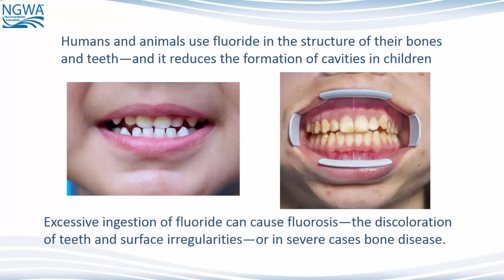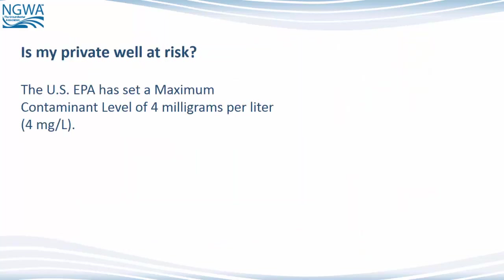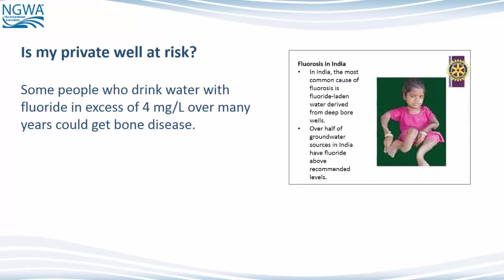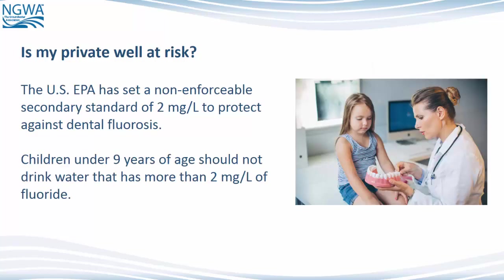Excessive ingestion of fluoride can cause fluorosis — the discoloration of teeth and surface irregularities — or in severe cases, bone disease. The U.S. EPA has set a maximum contaminant level of 4 mg per liter. Some people who drink water with fluoride in excess of 4 mg per liter over many years could get bone disease. The EPA has also set a non-enforceable secondary standard of 2 mg per liter to protect against dental fluorosis. Children under 9 years of age should not drink water that has more than 2 mg per liter of fluoride.